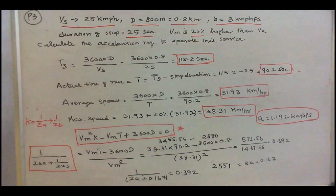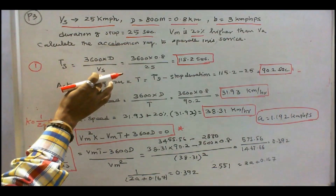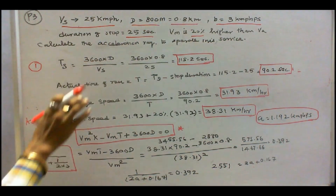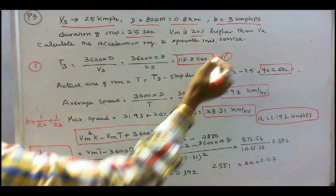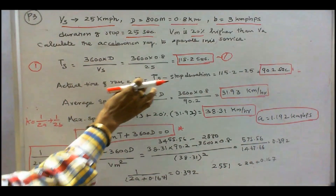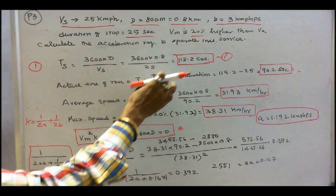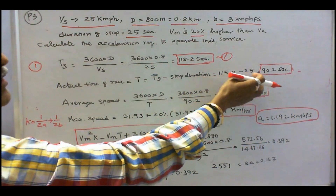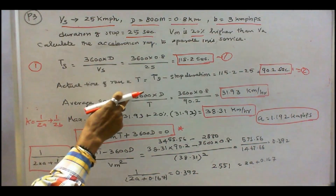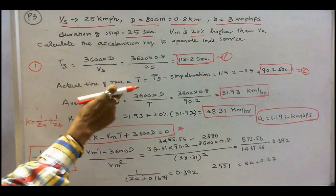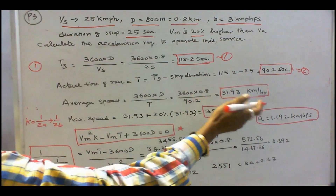Step 1: calculate schedule time ts equals 3600 times d divided by vs, where d is 0.8 and vs is 25, giving 115.2 seconds. Step 2: actual time of run T equals schedule time minus stop duration, that is 115.2 minus 25, equals 90.2 seconds. Step 3: average speed equals 3600 times d divided by T, that is 3600 times 0.8 divided by 90.2, equals 31.93 km per hour.